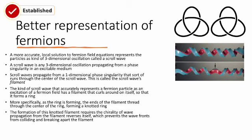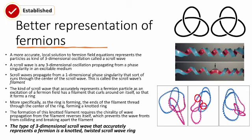The formation of a knotted filament requires the chirality of wave propagation from that filament to revert itself. This prevents the wave fronts from colliding and breaking apart the filament. The filament twists either clockwise or counterclockwise — and there need to be points where that chirality reverses itself, which is called a perversion of the chirality. The type of scroll wave that accurately represents a fermion is a knotted, twisted scroll wave ring — a scroll wave that propagates from a knotted, twisted filament.